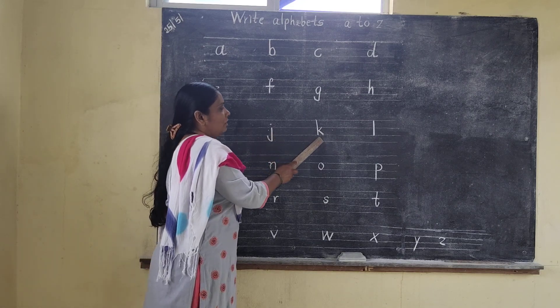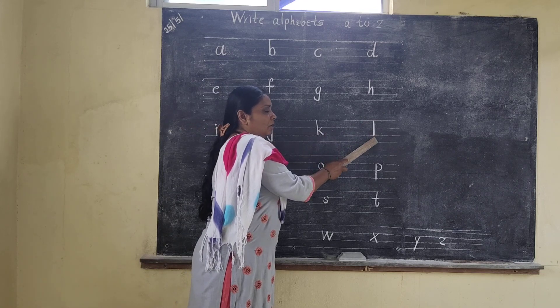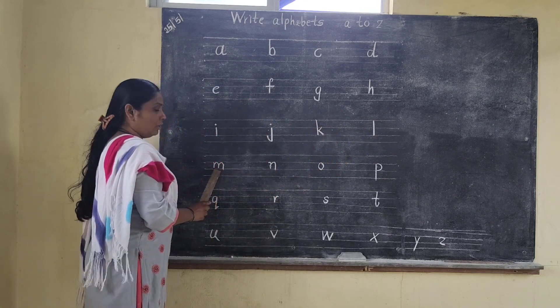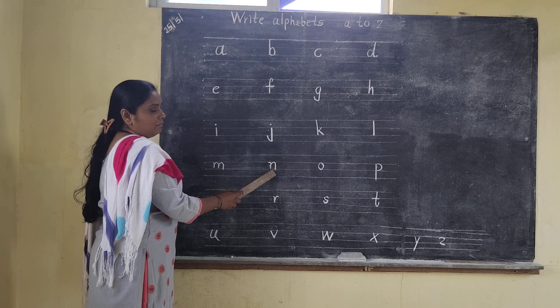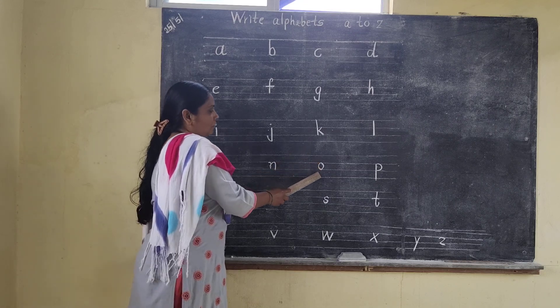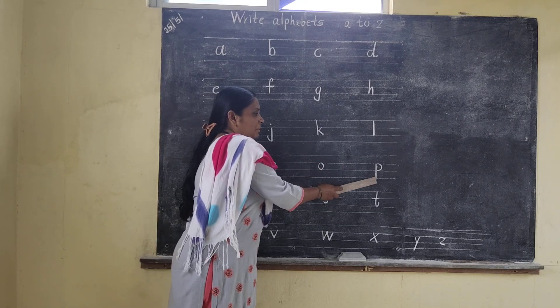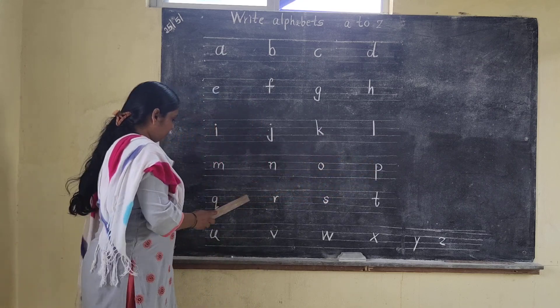K for sky. L for lion. M for monkey. L for mace. O for orange. T for peacock.